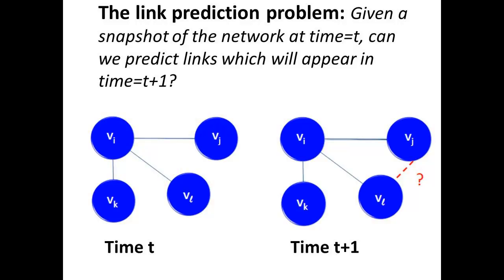The Link Prediction Problem asks: Given a snapshot of a network at time t, can we predict the new links that will occur at time t plus 1? Well, we think the answer is yes.